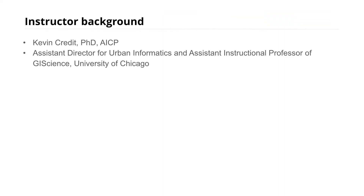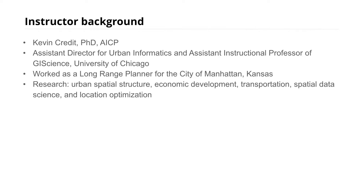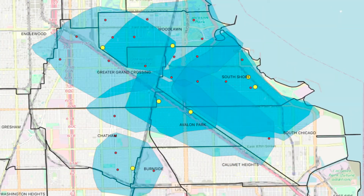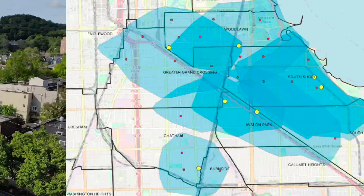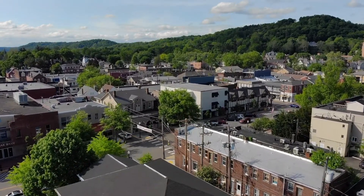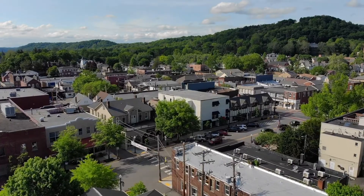Hello and welcome to Location Optimization Models. I'm Kevin Credit, an Assistant Instructional Professor in GI Science at the University of Chicago and Assistant Director for Urban Informatics at the Center for Spatial Data Science there. My research interests really center around using spatial analytical methods to understand how urban spatial structure, the built environment, and transportation influence equitable health, economic development, and social outcomes.